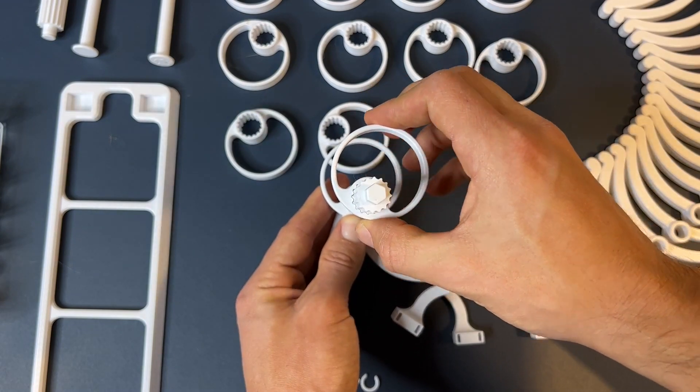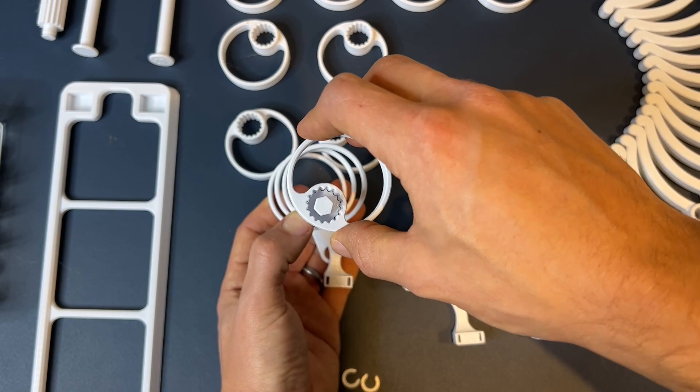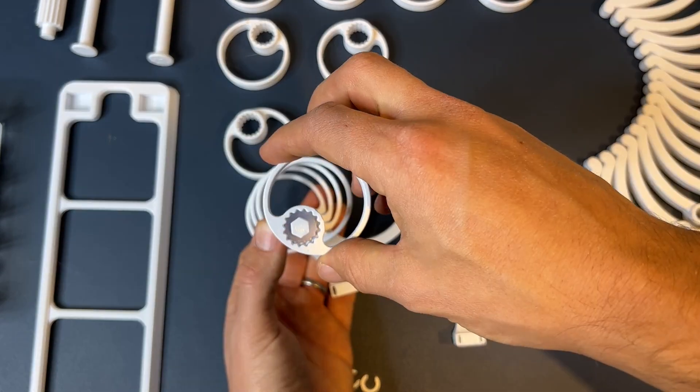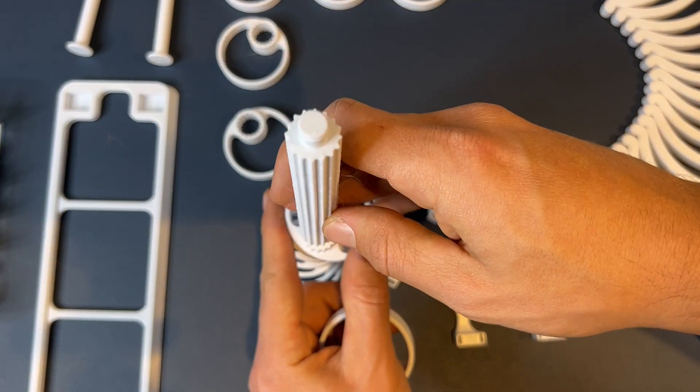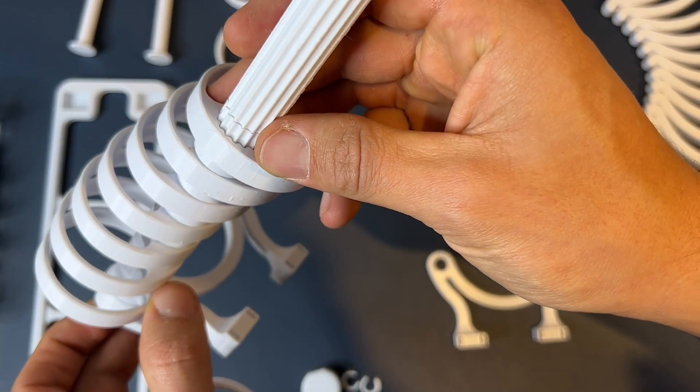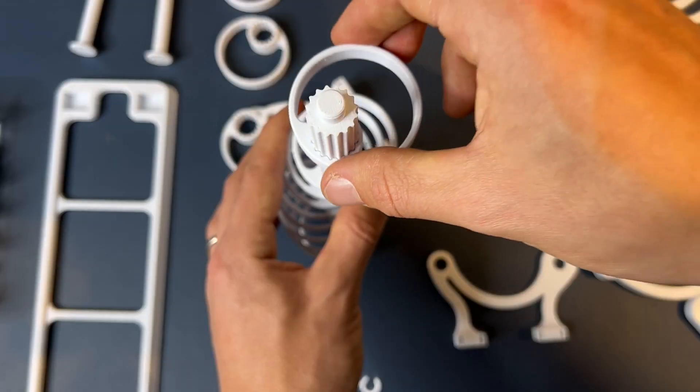Now grab each cam, rotate it by one spline and slide it on, and then repeat that for the rest of the 16 cams. When you get to the end of the first half of the shaft, slide the second half of the shaft on. Make sure that the splines align, then continue sliding the cams onto the shaft.